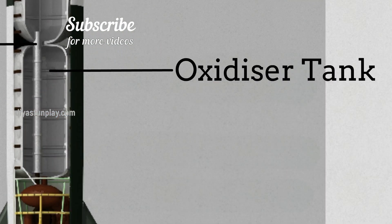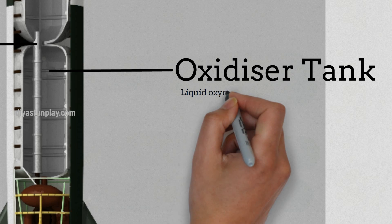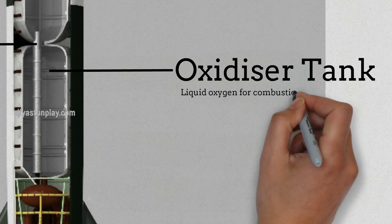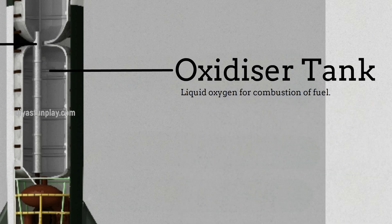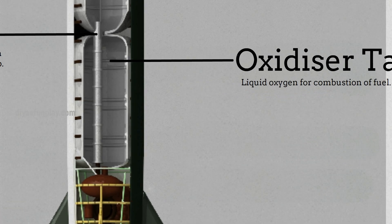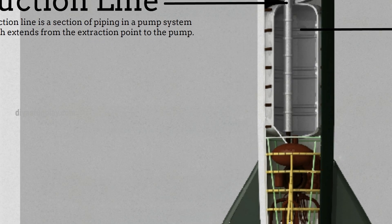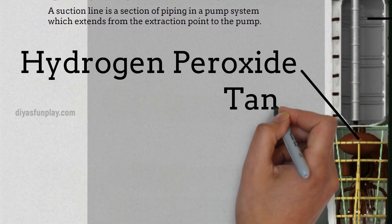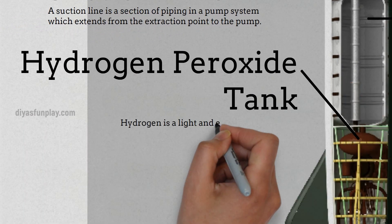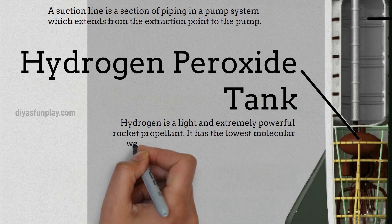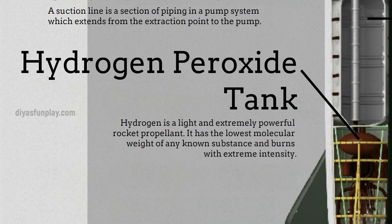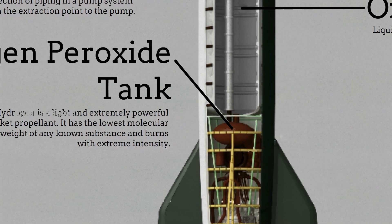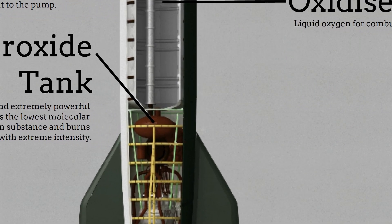Oxidizer tank — liquid oxygen for combustion of fuel. Hydrogen peroxide tank. Hydrogen is a light and extremely powerful rocket propellant. It has the lowest molecular weight of any known substance, and burns with extreme intensity.